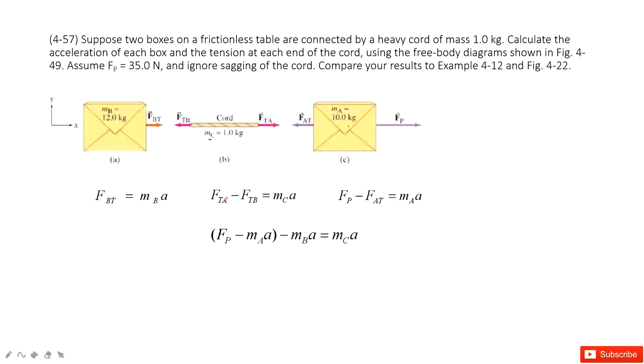So in this one, it is easy. You can see F_T,A equals F_P minus mass M_A times A. And then F_T,B equals mass B times acceleration, and then equals M_C times acceleration.